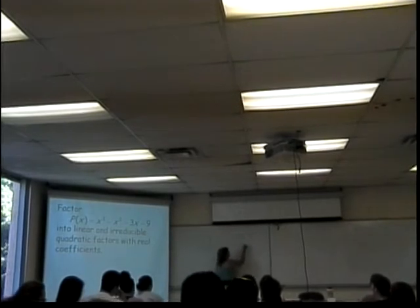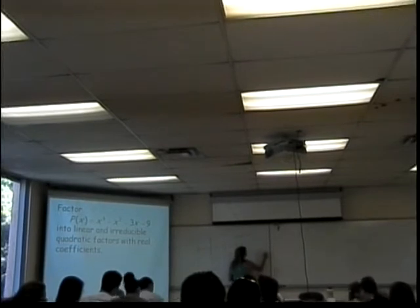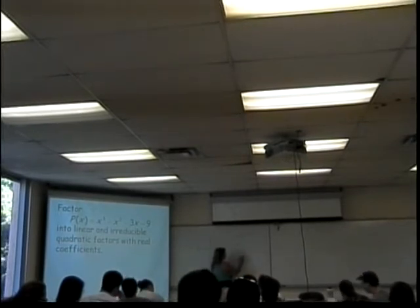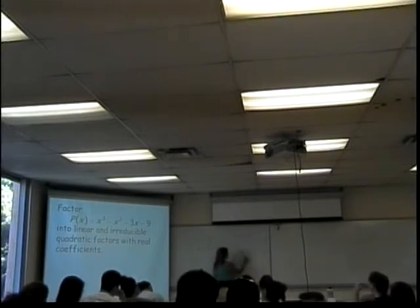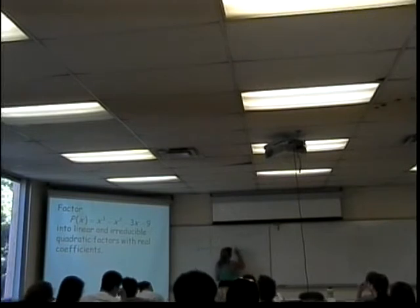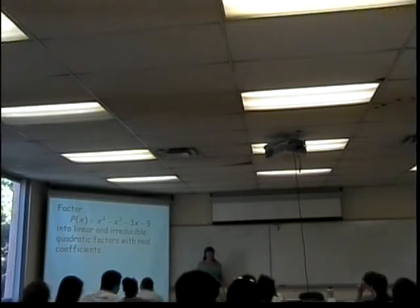So I'm going to have 1, negative 1, negative 3, and negative 9. Bring down the 1. Multiply 3 times 1, I get 3. Negative 1 plus 3 is 2. 3 times 2 gives me 6. Negative 3 plus 6 gives me 3. And 3 times 3 gives me 9. Negative 9 plus 9 is 0 — yes, it was a 0.